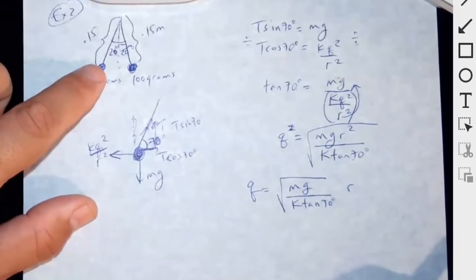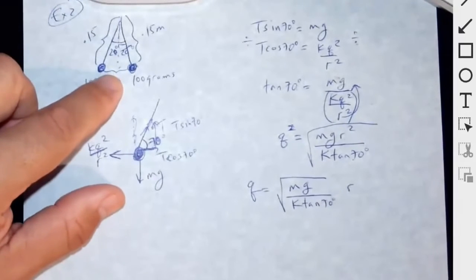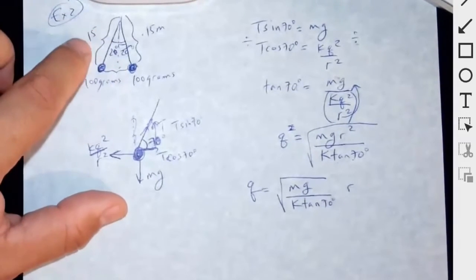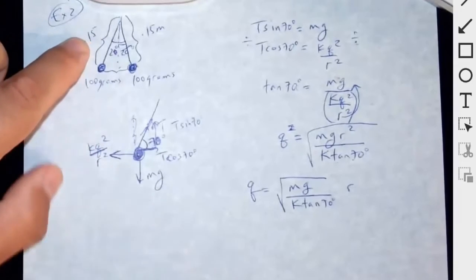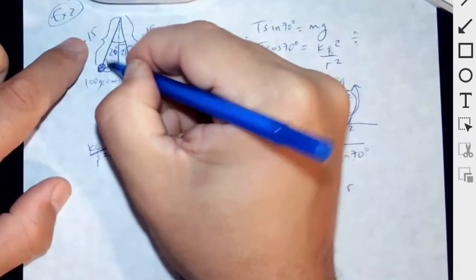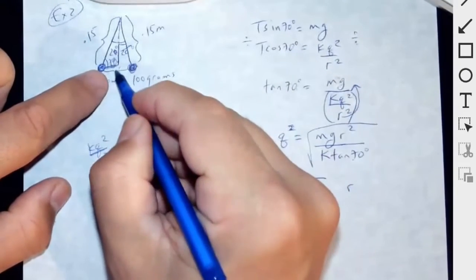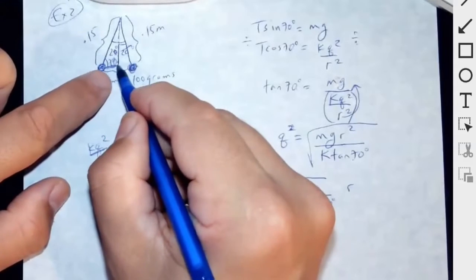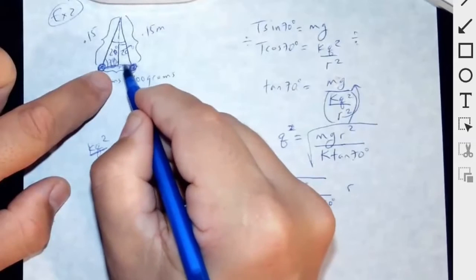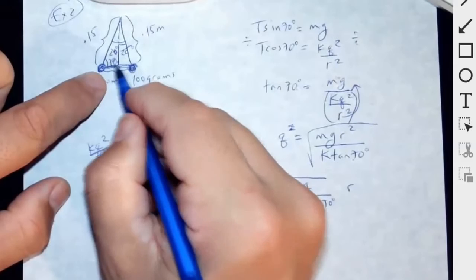Now in our case, what would be the distance between these? What would the R be? We would have to do 0.15 if we know the length of the string. 0.15 times what? If this is 70, I can do 0.15 cosine of 70, right, and then double that distance. So R is going to be 0.15 cosine of 70.